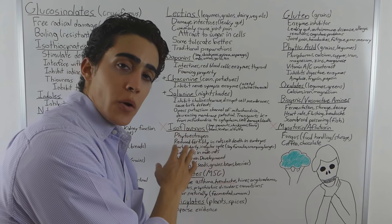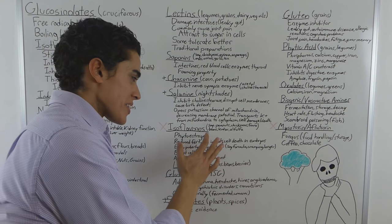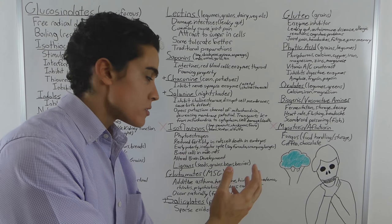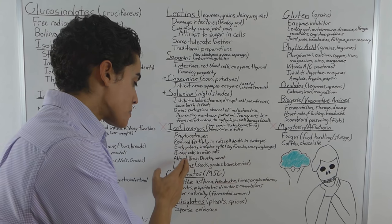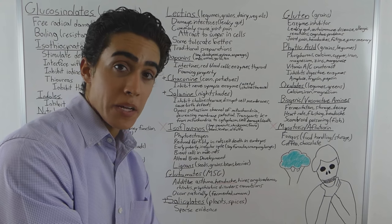Lignans are phytoestrogens that occur in seeds, grains, beans and berries. Although you would think they might have similar effects to isoflavones. The amount of phytoestrogens that occur in foods like soy and peanuts eclipse lignans by like dozen to hundred fold in many, many cases.